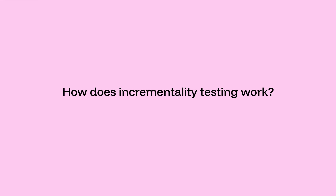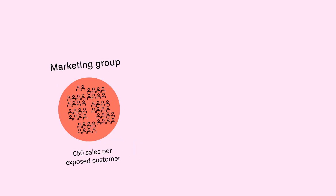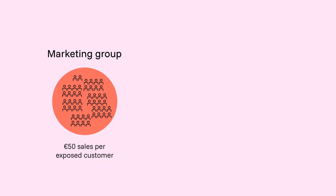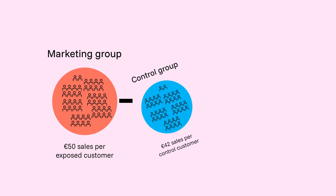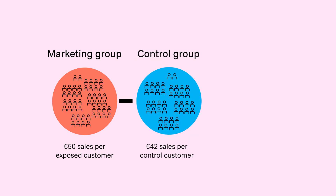So how does incrementality testing work? Incrementality testing starts with control and treatment groups. You split your audience into two groups: one that is exposed to the marketing activity, and one that is not.